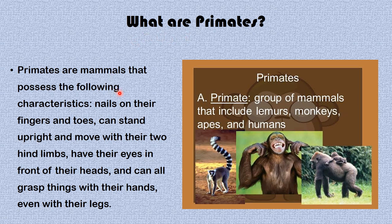Now we'll be looking at the topic: what are primates? Primates are mammals that possess the following characteristics: they have nails on their fingers and toes, they can stand upright and move with their two hind limbs — that means legs — they have their eyes in the front of their heads, and can grasp things with their hands and even with their legs.